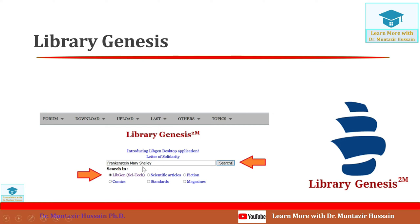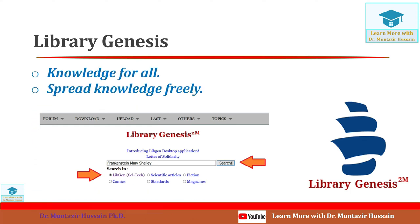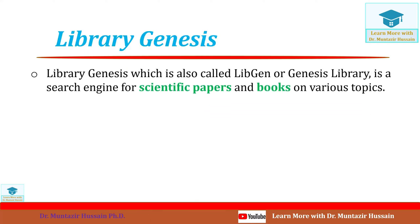This is the front view of the Library Genesis website. You can download a research paper by clicking 'Scientific Article', or download a book by clicking 'Sci-Tech'. You can also download other types of content such as fiction books, comic books, standards, and magazines. The motivation behind Library Genesis is knowledge for all — to spread knowledge freely.